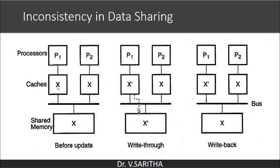If you see here: P1 is using x', P2 is having x in its local cache, and shared memory is having x — this is before the update. In the case of write-through, P1 updates to x' and main memory is also updated. In the case of write-back, P1 will have x' but P2 and shared memory will both still have x without updating. So you can see there is inconsistency in the data.